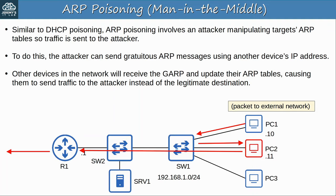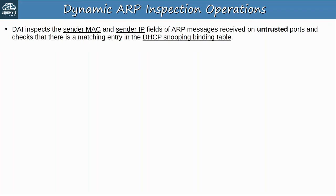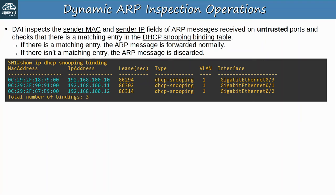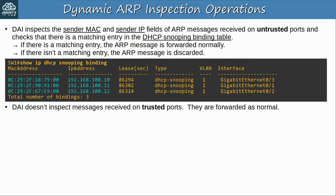Now let's see how DAI can protect against this kind of attack. DAI inspects the Sender MAC and Sender IP fields of ARP messages received on untrusted ports and checks if there is a matching entry in the DHCP snooping binding table. The DHCP snooping binding table contains the MAC addresses and IP addresses of DHCP clients. If there is a matching entry, the ARP message is forwarded normally. However, if there isn't a matching entry in the DHCP snooping binding table, the ARP message is discarded. This check only occurs on untrusted ports — DAI doesn't inspect messages received on trusted ports.